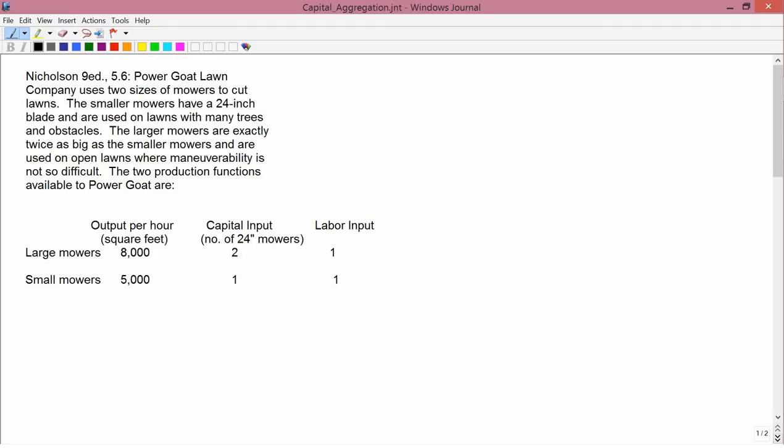The generic production function which we've been using ever since we started talking about the theory of the firm is Q equals F of water and fertilizer, where Q was corn.